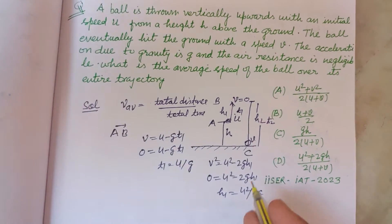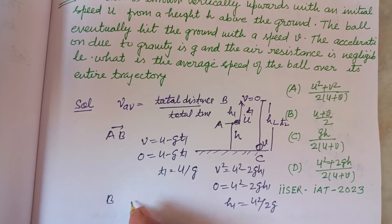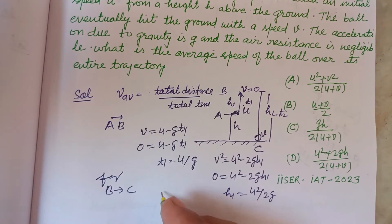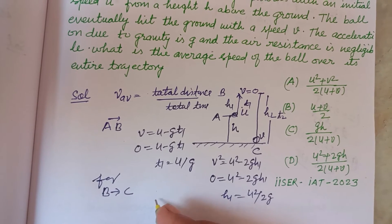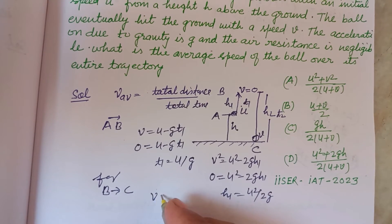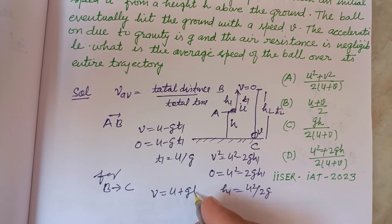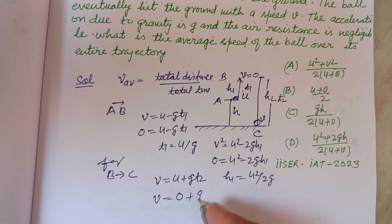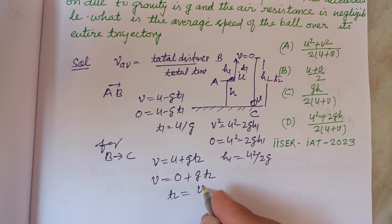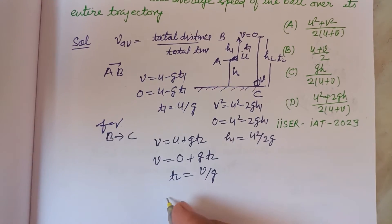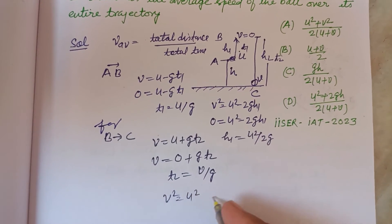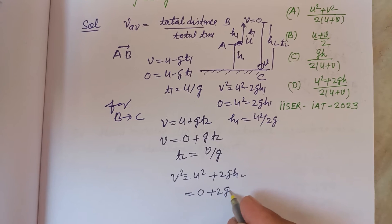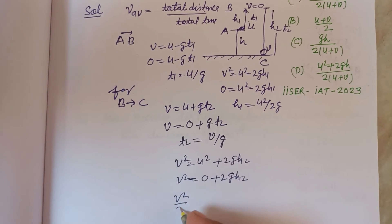Now for the motion of B to C, here U is 0. So the time taken: V equals U plus gt2, this time is t2, and final velocity is V, and U is 0, so gt2. Therefore t2 equals V over g. And V squared equals U squared plus 2gh2, so V squared over 2g equals h2.